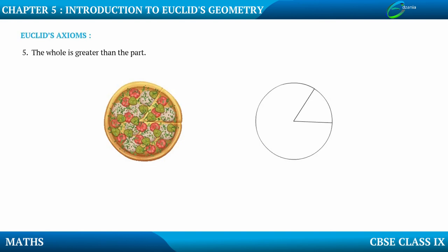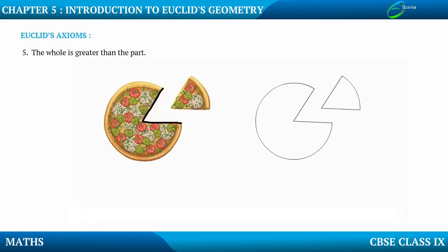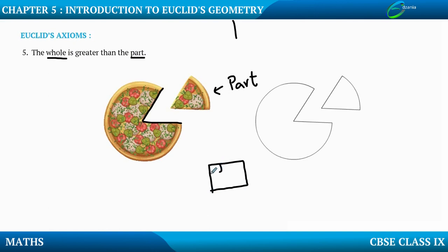The whole is greater than a part — a very simple one. Consider an entire pizza. If we cut a part and remove it, that removed piece is just a part, and the entire pizza will always be greater than that part. Similarly, consider a big square — if we cut a small square from it, the big square is the whole and the small square is the part, and the whole is always greater than the part.